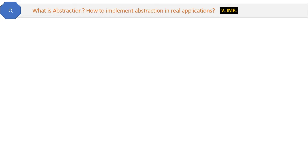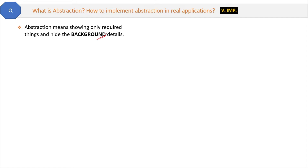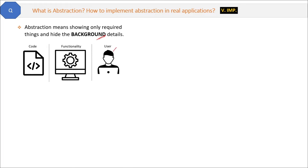Abstraction means showing only required things and hiding the background details. For example, suppose you have a web application — the end user can use that application and knows how to use it, but does he know how the application code is working internally? No. That is abstraction. A user can use the application without knowing the code, just like a driver can drive a car without knowing the engine's internal working.